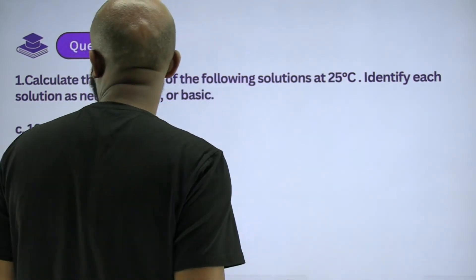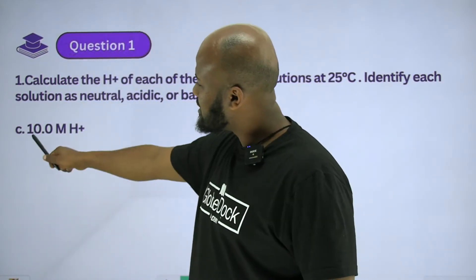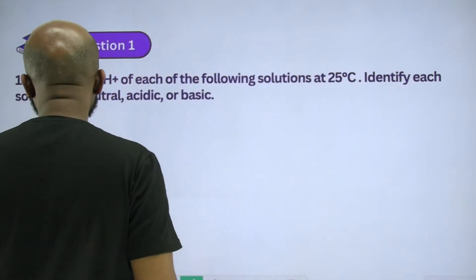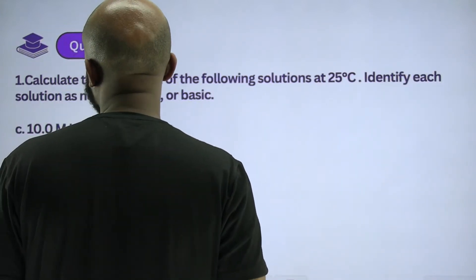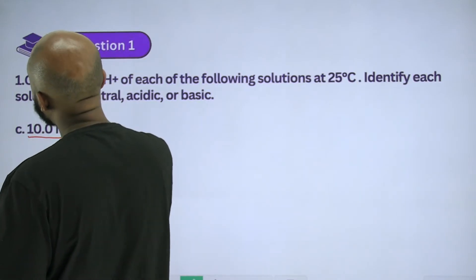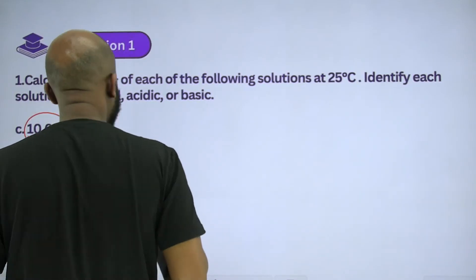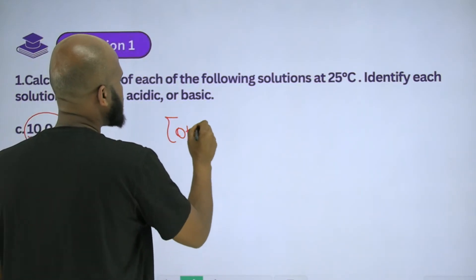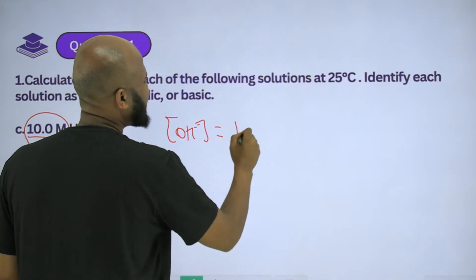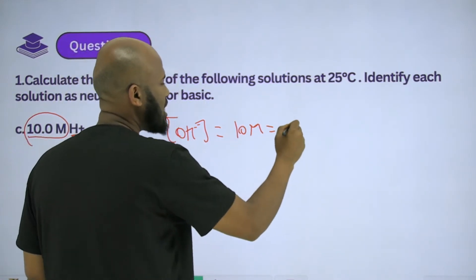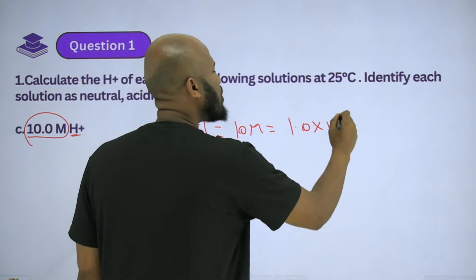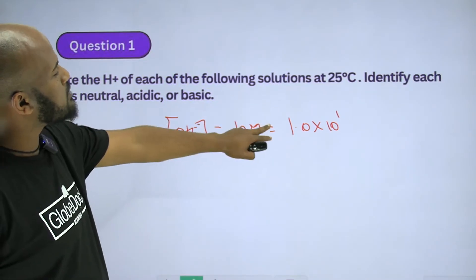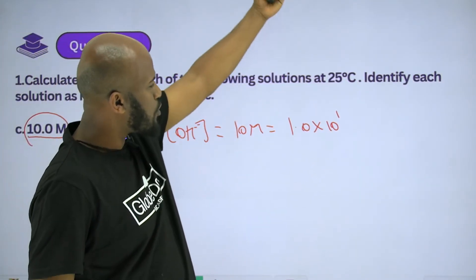Another one: calculate the concentration for 10 molar OH. The concentration of OH⁻ is equal to 10 molar, which is 1.0×10⁻¹ molar.